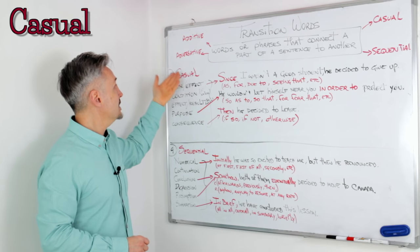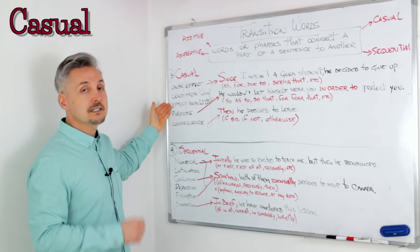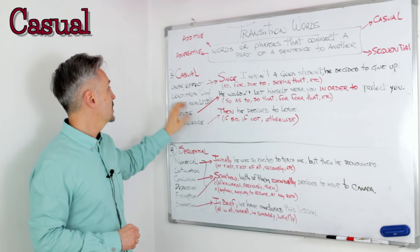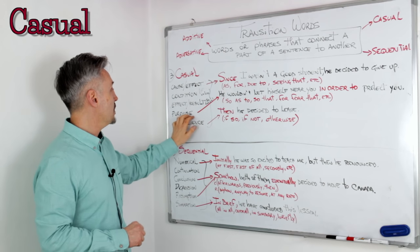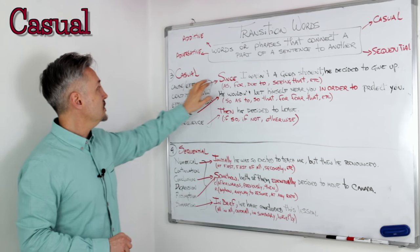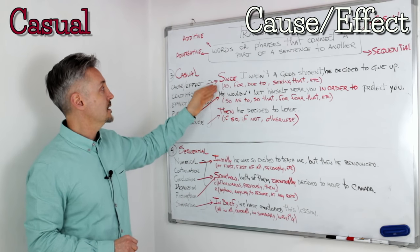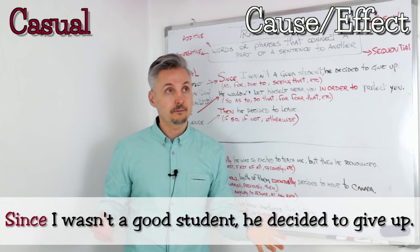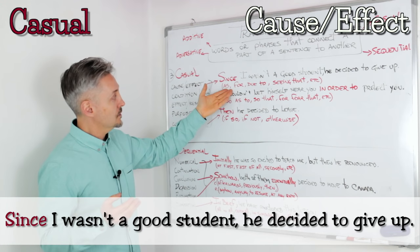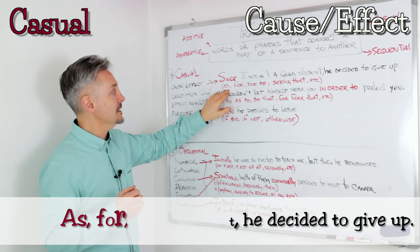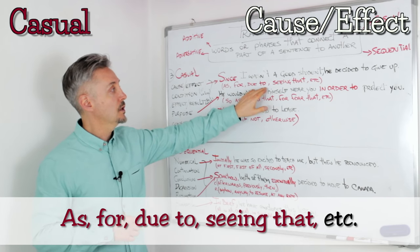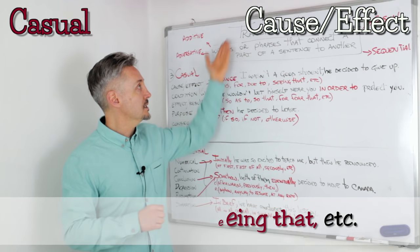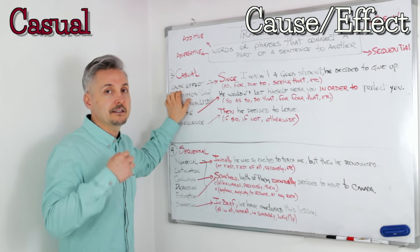The third group is the causal one, and I subdivided it into five subgroups: causal effect, condition, effect and result, purpose, and consequence. The first is cause and effect. For example: 'Since I wasn't a good student, he decided to give up.' 'Since' can be replaced with 'as,' 'for,' 'due to,' 'seeing that,' etc. These are all transition words for cause and effect.